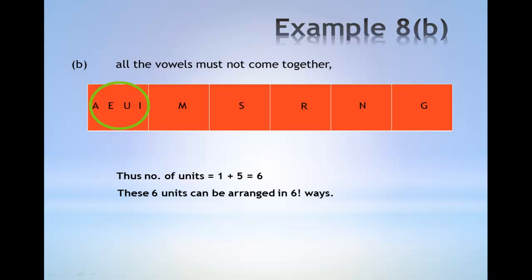For example, as shown, another possible permutation. The four vowels can be permutated in four factorial ways among themselves.